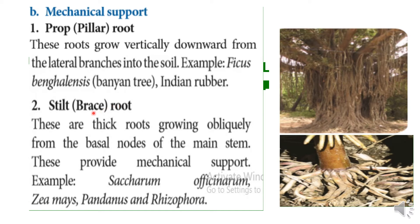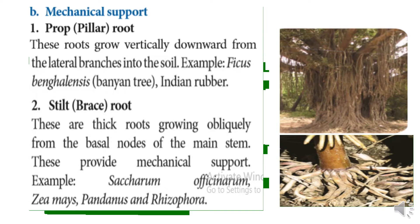Next root is Stilt or Brace Root. These roots are found in sugarcane plants. The stem's basal region is made with nodes, and these roots form an extra mechanical support. Other examples include Pandanus and Rhizophora, which is a mangrove plant. This is the stilt root arising from the basal nodes of the main stem.